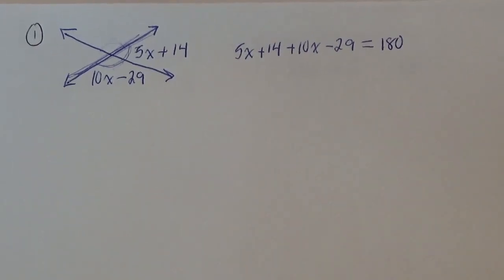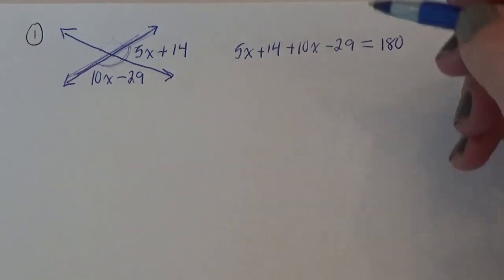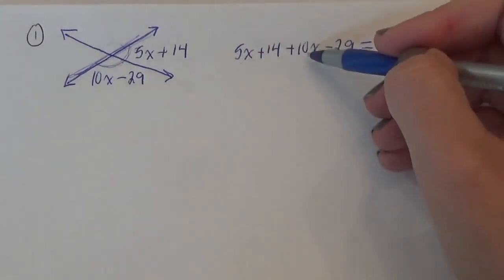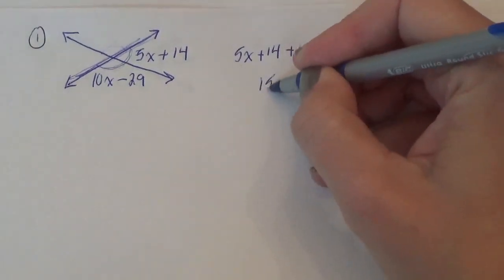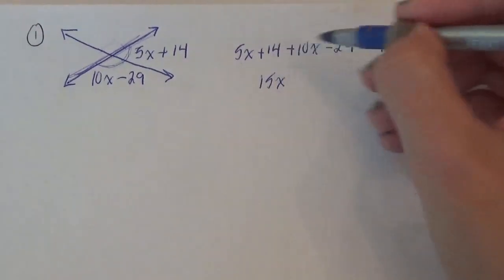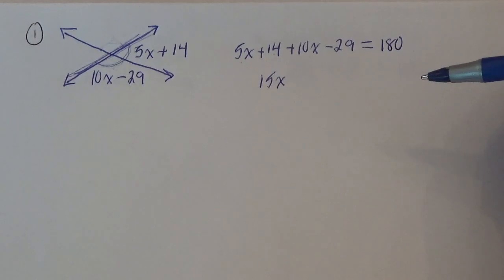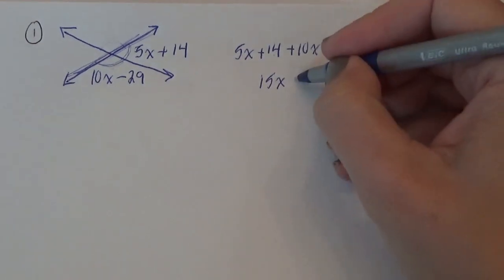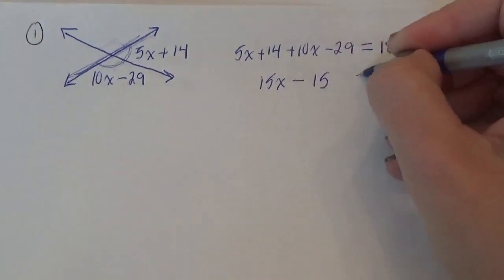Really got to look at where the algebra is. So if we are going to solve this now, 5x plus a 10x, that's 15x. 14 minus 29, that's going to be minus 15.